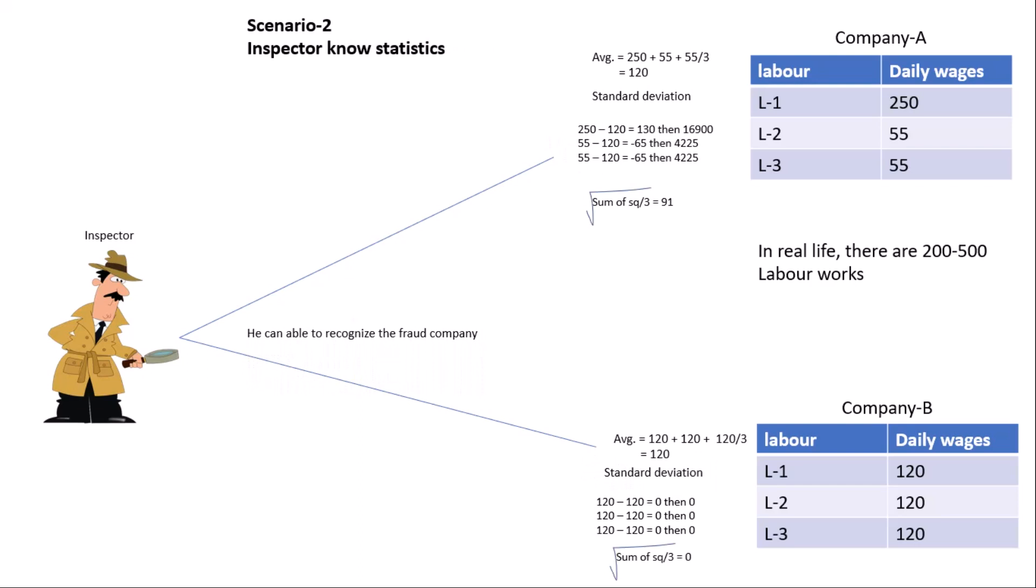So in this scenario, what happens? The inspector knows statistics. If he knows statistics, he can recognize the fraud company. As you can see, the standard deviation is 91 as compared to zero, which is a very big difference.